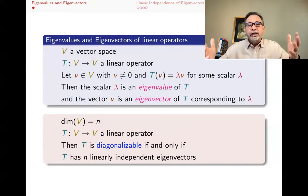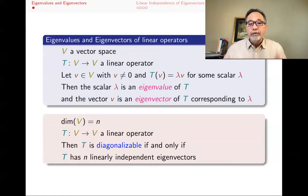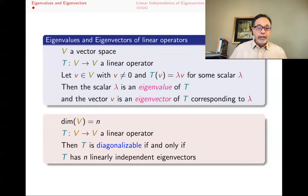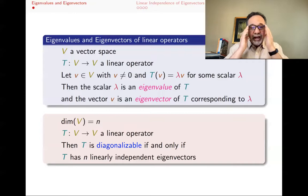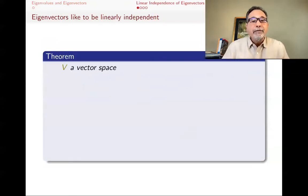So you might have a whole bunch of eigenvectors available. You don't need all of them, but you want to find as many linearly independent ones as you can, because you want to make a basis for your vector space out of those eigenvectors. To be a basis, they need to span and be linearly independent. The point is that eigenvectors like to be part of a basis, and they help us out by often being linearly independent from each other.